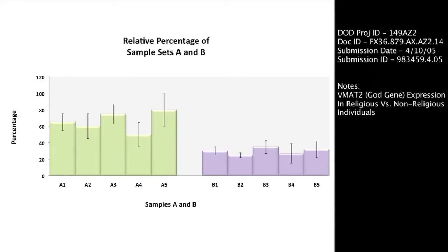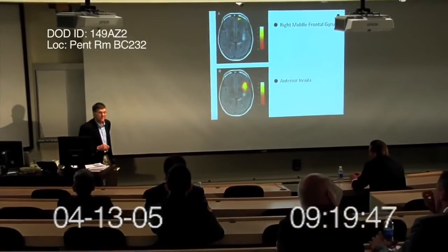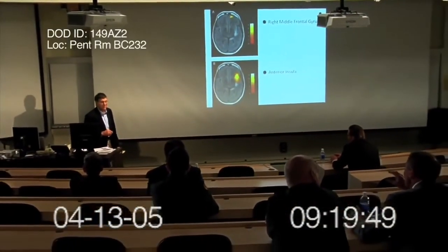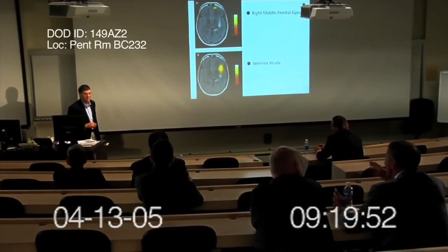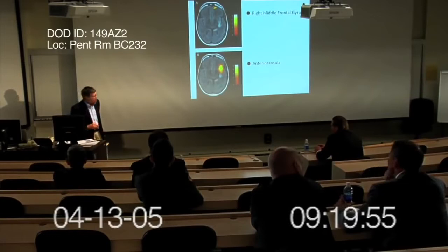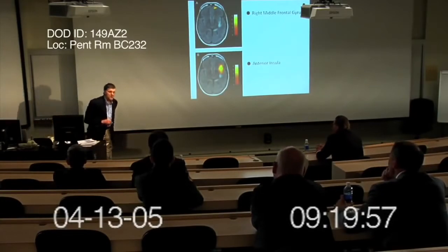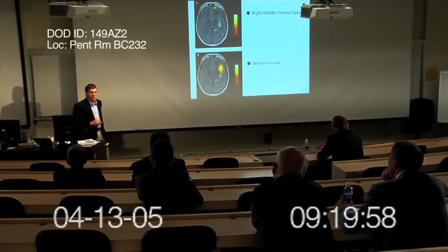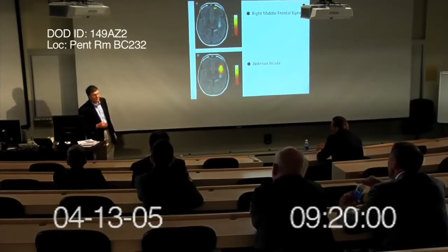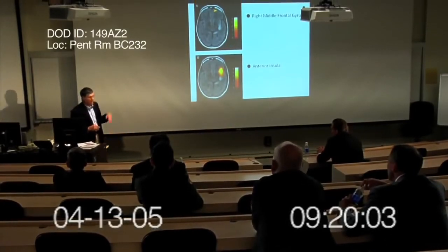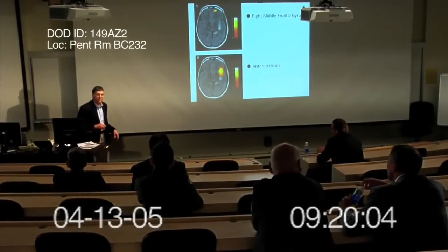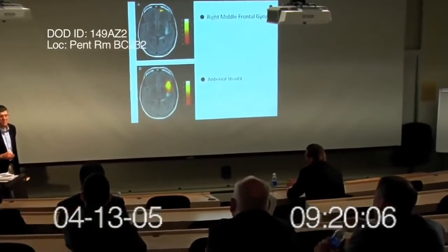What you see here is that by spreading this virus, we're going to eliminate individuals from donning a bomb vest and going into a market and blowing up the market. So our hypothesis is that these are fanatical people, that they have overexpression of the VMAT2 gene, and that by vaccinating them against this, we'll eliminate this behavior.